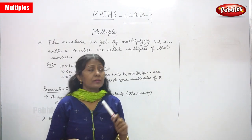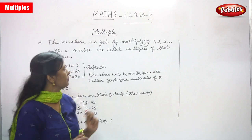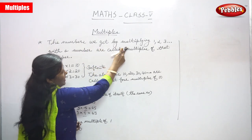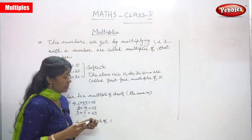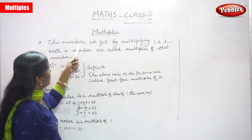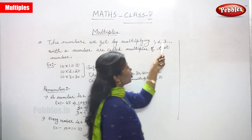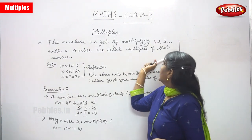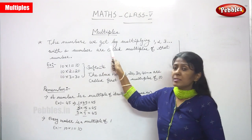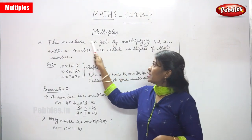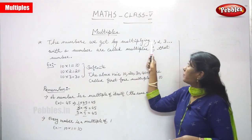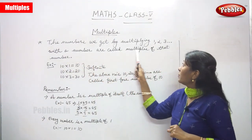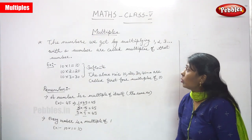We are going to see a new chapter: multiples. First we must know what a multiple is. The numbers we get by multiplying 1, 2, 3, and so on with a number are called multiples of that number.